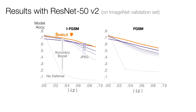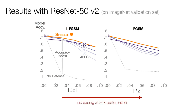Let us now take a look at some of the results of this approach on the ImageNet validation set. Here, we see two graphs for the iterative fast gradient sign method and the fast gradient sign method, which are two effective adversarial attacks. On the x-axis, we are modulating the amount of perturbation introduced by the attack, and on the y-axis, we have the model accuracy. The grey dotted line shows that the model accuracy falls when there is no defense. JPEG compression alone brings up this accuracy, and we see that SHIELD consistently outperforms in the adversarial setting.